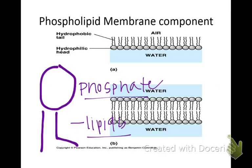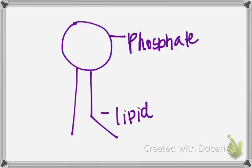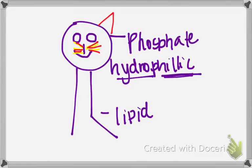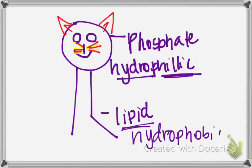The head of the phospholipid is negatively charged, and it really, really likes water — so we call that hydrophilic. The head is hydrophilic, which means it loves water. Think about it like a cat that's going to drink water. But the lipid part — you've known forever that oil and water don't mix, like a lava lamp. The lipid tails don't like water, so the lipid is hydrophobic, which means it is afraid of water.